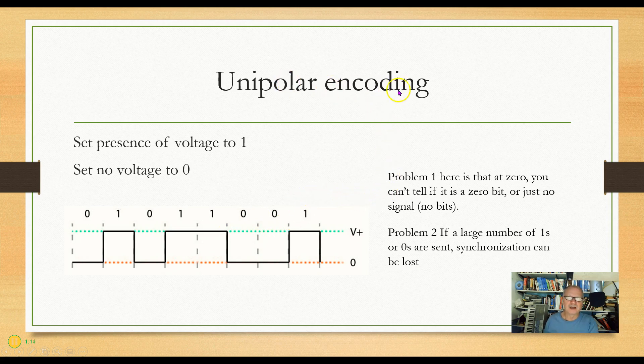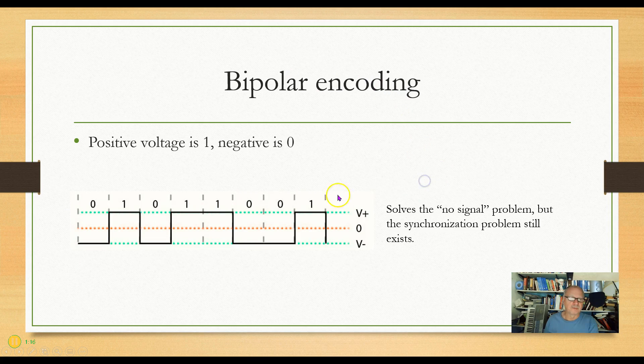We're going to use something called bipolar encoding to solve problem number 1. So with bipolar encoding, here's my 0 line. I don't have 0. So now if I have no signal, it would be 0, and I would know that there are no 0's and 1's. So I have a negative voltage for 0, a positive voltage for 1. This still does not solve the second problem. If I have a string of 1's or a string of 0's, I could lose that synchronization.